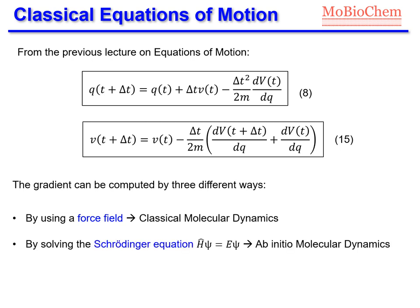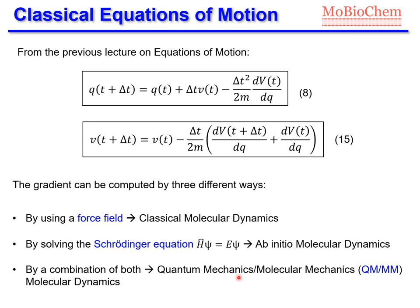We can also solve the Schrödinger equation in order to get the potential energy, and if this is the case, then we are running ab initio molecular dynamics. Finally, we can combine both approximations by solving the Schrödinger equation for a small fragment of the system — using quantum mechanics for a small fragment and a molecular mechanics force field for the rest of the system, for the environment. This approach is usually called QM/MM molecular dynamics.